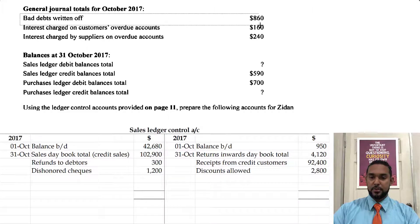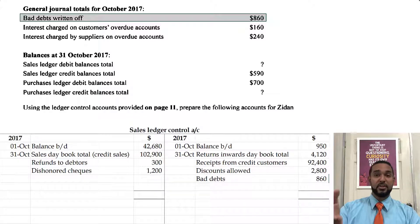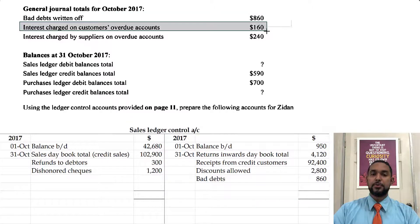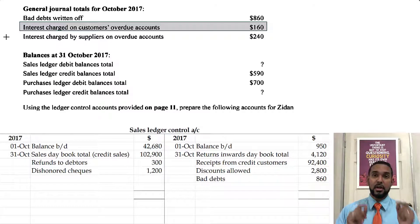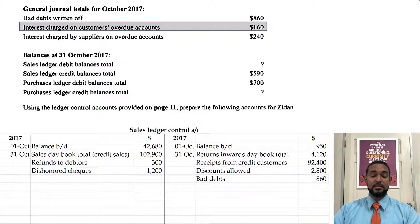We have bad debts written off. That's where our debtors cannot pay us, so basically we've lost that debt. Our asset has also lost value, which means we have to credit the asset account. Then there's interest charged on customers' overdue accounts — where customers take too long to pay and as a penalty we charge them interest, which increases the amount they have to pay, thereby increasing the debt or the asset. To record an increase in an asset it has to be debited.